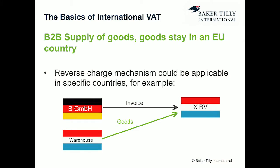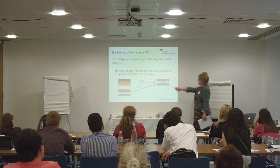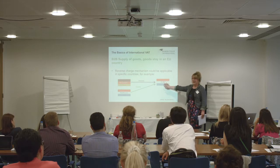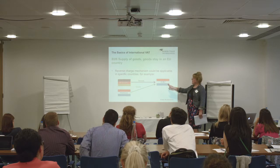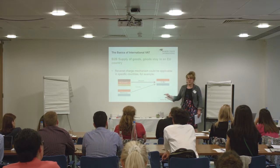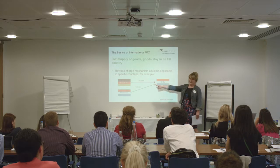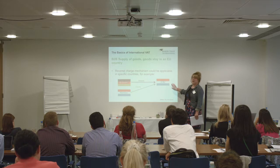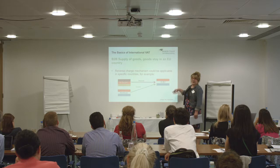In a more complex scenario: a German company has goods in a warehouse in the Netherlands and sells them to a Dutch entity. The supply is subject to Dutch VAT. However, some EU countries — including the Netherlands — have implemented a simplification rule. Where the customer is established in the Netherlands, the German company does not need to register there; instead, VAT is reverse-charged to the Dutch customer, who calculates the amount due and reclaims it — on balance, zero.